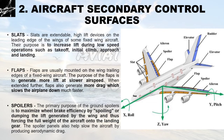After primary control surfaces we have secondary control surfaces, which generally improve the motion of the aircraft. First, slats — present on the leading edge of the wing on both sides. Slats are extendable high-lift devices on the leading edge of the wings of some fixed-wing aircraft. Their purpose is to increase lift during low-speed operations such as takeoff, initial climb, approach and landing.